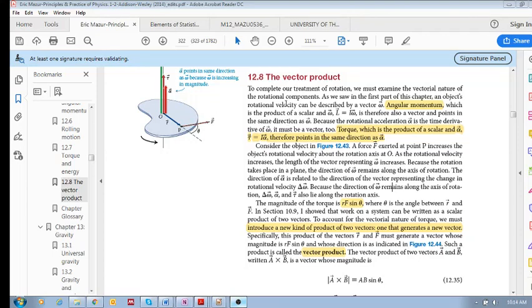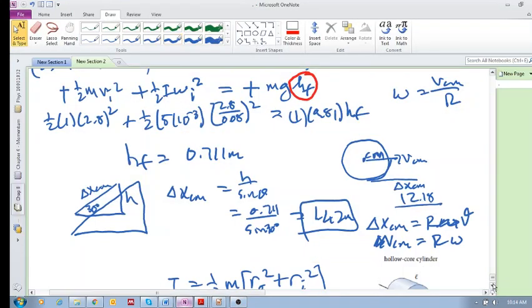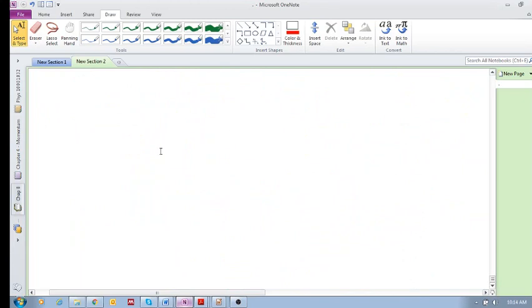Let's look at something called the vector product. To get some perspective, remember we've done something called the scalar product - other textbooks might call it the dot product.